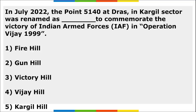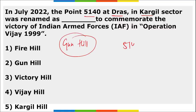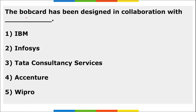The first question: Point 5140, located at Dras in the Kargil sector, was renamed to what? It was renamed to Gun Hill to commemorate the victory of Indian armed forces in Operation Vijay 1999. This is a highly important question - mark it. The correct option is option second.